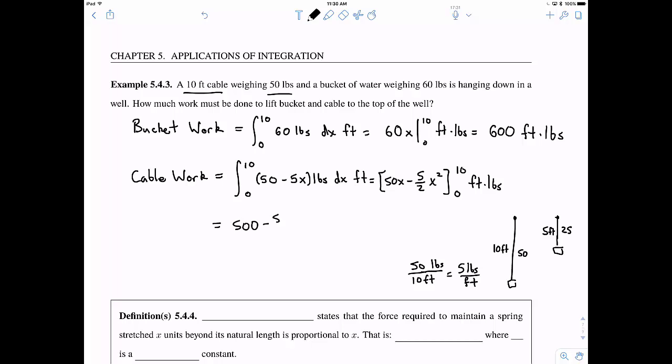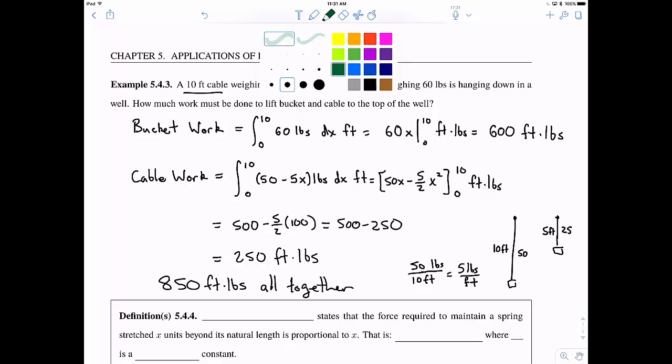And now we can plug in the 10. Of course when we plug in 0 into either x or x squared, it's going to be 0. And so this is 500 minus 250, so that gives us 250 foot-pounds. So combine that with the bucket, which we know is 600. Altogether, that should give us 850 foot-pounds. So that's how much work it would take to lift the bucket and of course the cable out of this nice well.